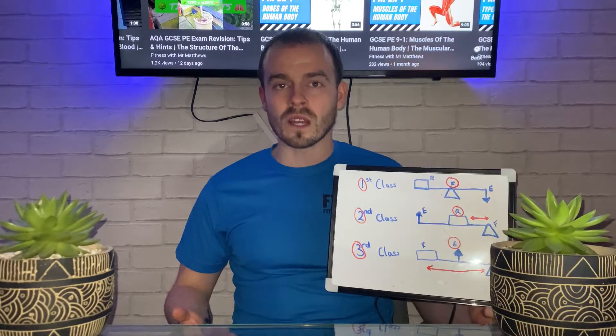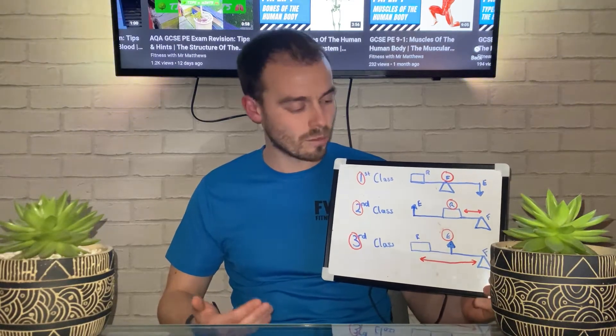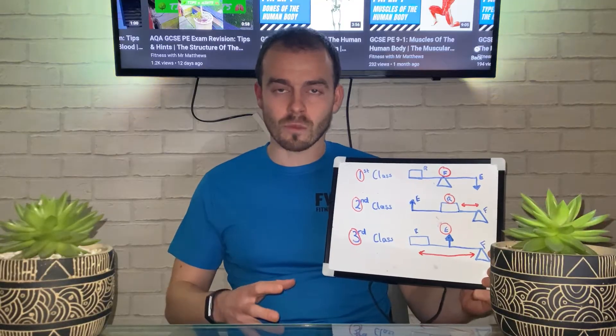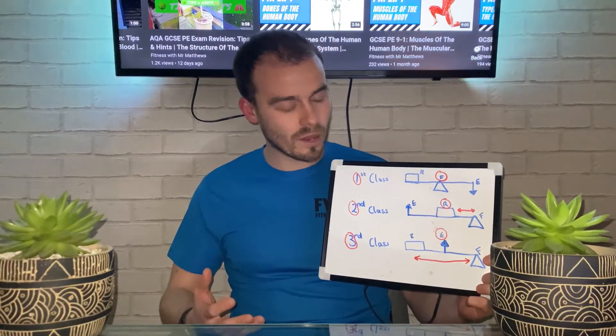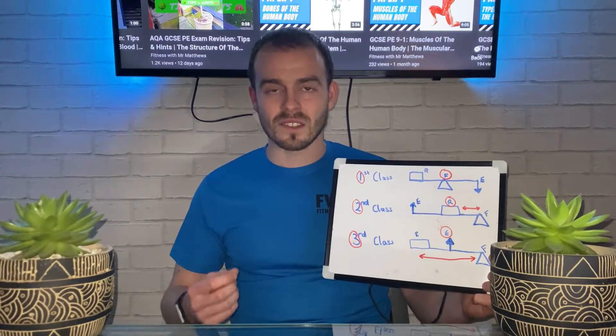To begin, I'll discuss the different parts that make up each lever system. You have a fulcrum, which can also be known as the pivot, the resistance, which can also be known as the load, and the effort.